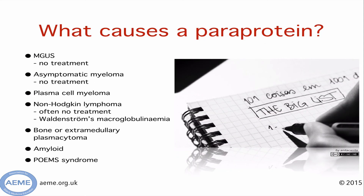There are a number of other causes of a paraprotein other than myeloma. The most common is MGUS — monoclonal gammopathy of undetermined significance — which does not require any treatment. It is important to note that non-Hodgkin lymphoma, specifically Waldenström's macroglobulinaemia, can also produce paraproteins, along with extramedullary plasmacytomas, amyloid, and the very rare POEMS syndrome.